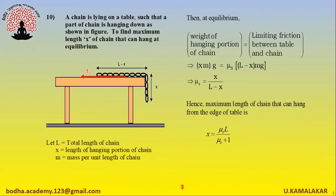A chain is lying on a table such that part of the chain is hanging down as shown in figure. Let capital L be the total length of the chain, x be the length of the hanging portion, and m be the mass per unit length of chain. At equilibrium, the weight of the hanging portion equals the limiting friction between the table and chain. Hence the coefficient of static friction mu_s equals x divided by (L minus x).